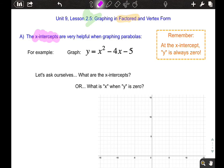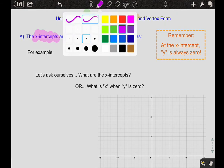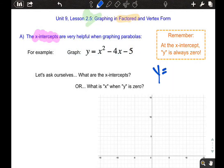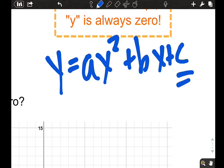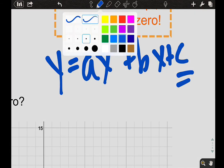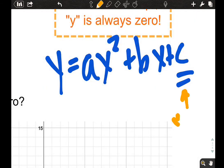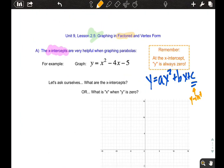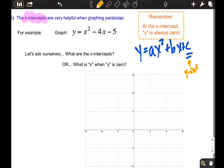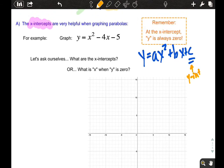If we can figure out where the x-intercepts are, that makes life easier. Remember that if we have y equals ax squared plus bx plus c, we know that the c is the y-intercept. This here is the y-intercept. What about the x-intercept? How does that work?